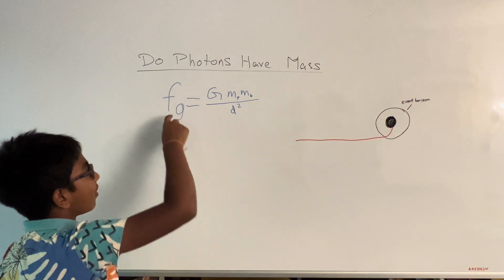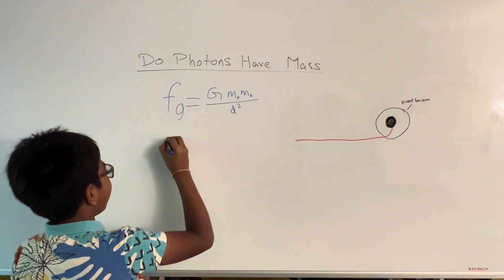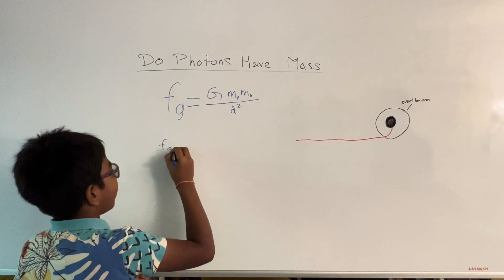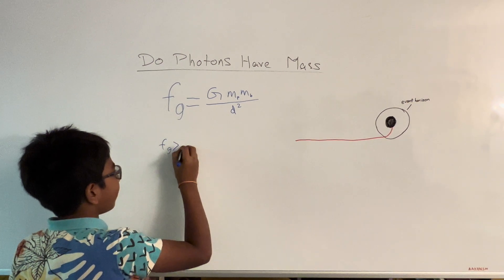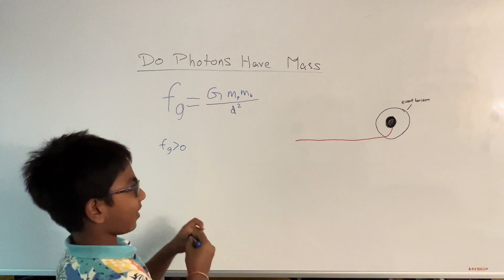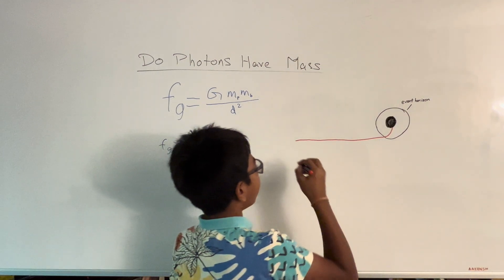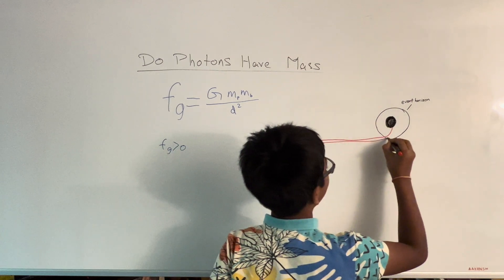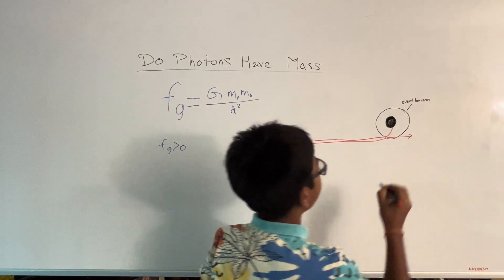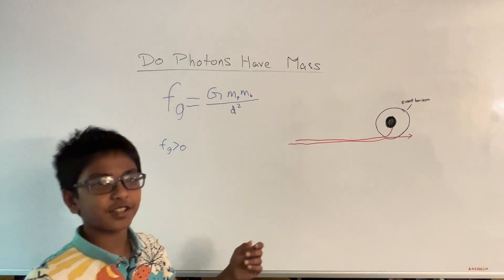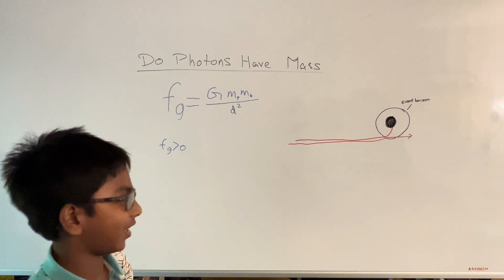And we know that the force of gravity must be greater than zero because otherwise the photon would just pass through the event horizon like that because there would be no force of gravity at all acting on this.